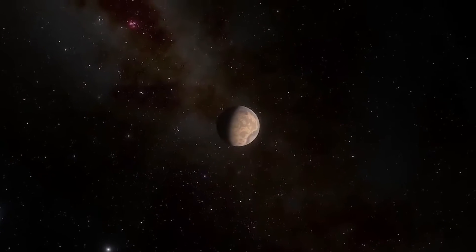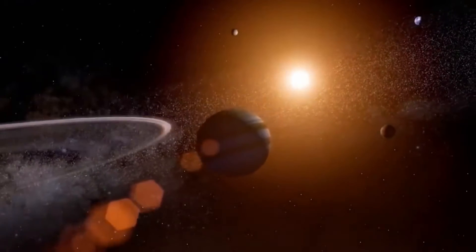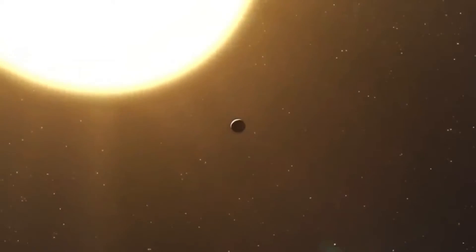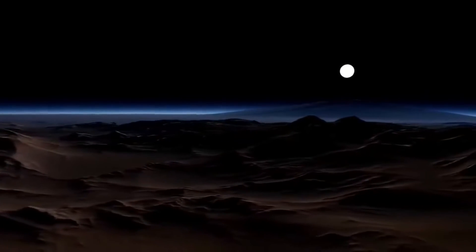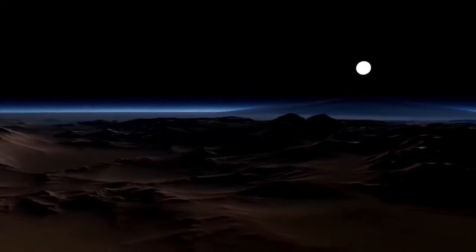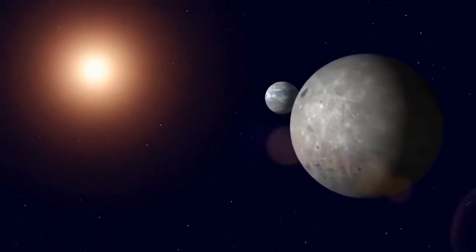But Proxima b is not just any exoplanet. It is also close to Earth. It is, in fact, the closest exoplanet to our solar system. In comparison to more distant exoplanets, this makes it much easier for scientists to study and collect data on it.